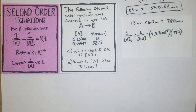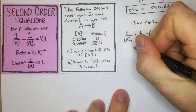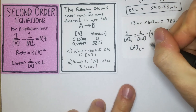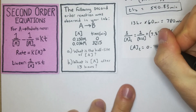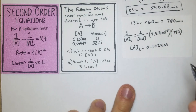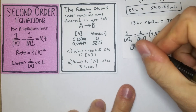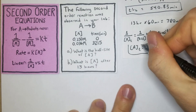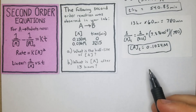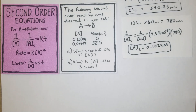Solving that gives us [A]t = 0.1024 M. That is the concentration of A after 13 hours. From there we'll jump into the next problem.